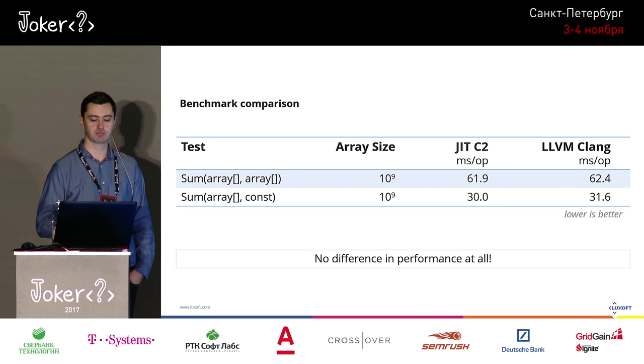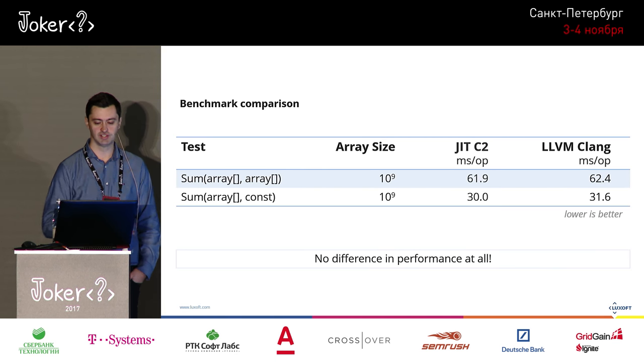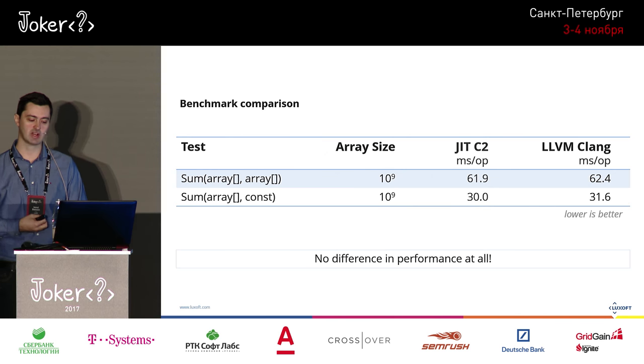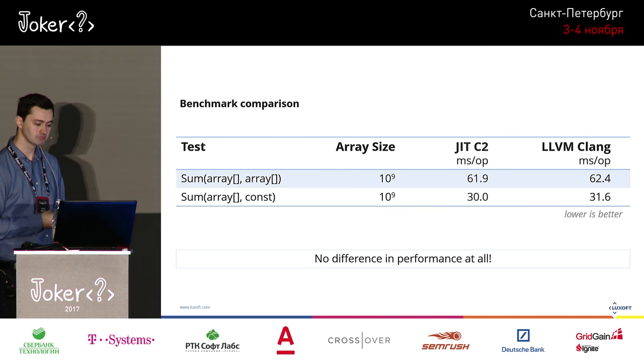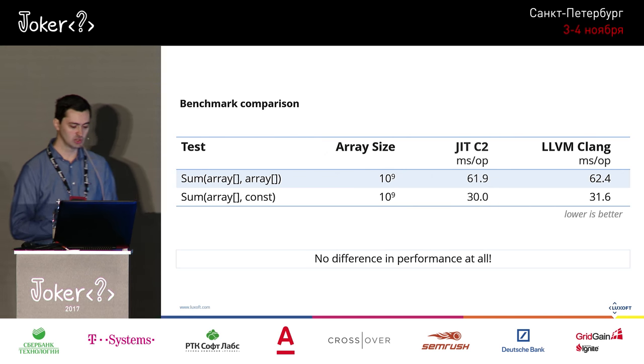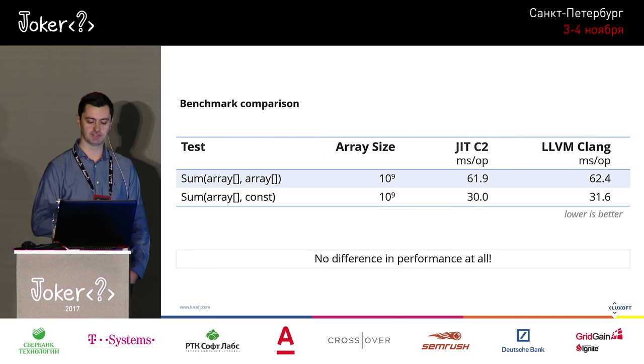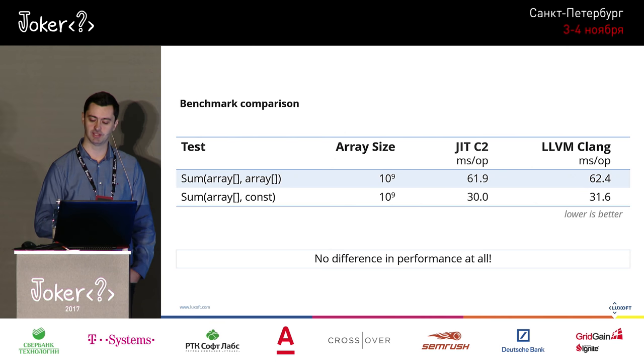In terms of benchmark comparison for the two-array sum, it's not surprising: JIT C2 is almost the same as LLVM Clang, so I conclude there is essentially no performance difference.